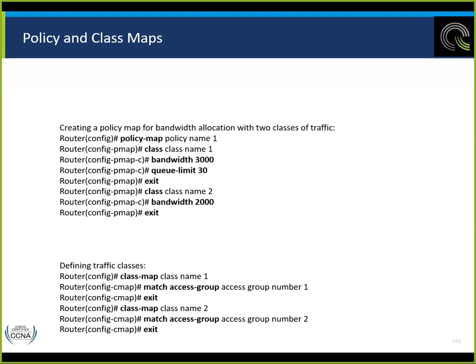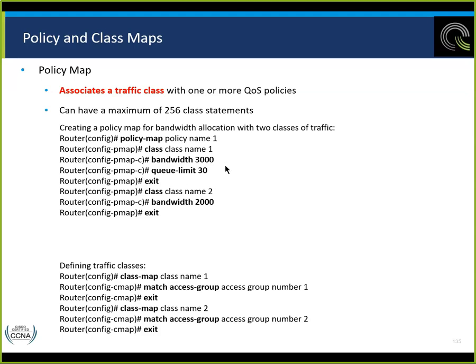The lab you have is a little different — instead of an access control list, it uses the type of traffic: voice, HTTP/web, and ICMP. Different priorities for each, which you'd expect. Policy map is the association of traffic with one or more QoS policies — maximum of 256 class statements. We can have multiple classes within a policy, but only one policy applied per interface per direction.